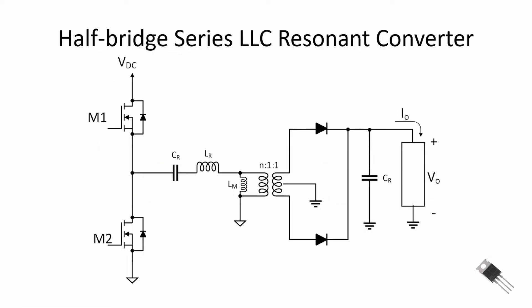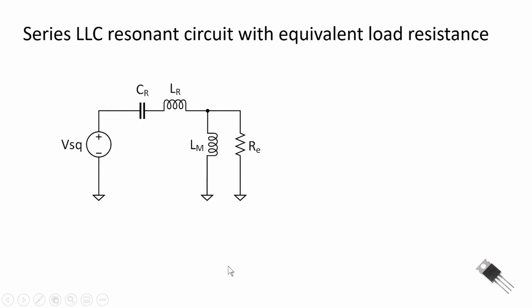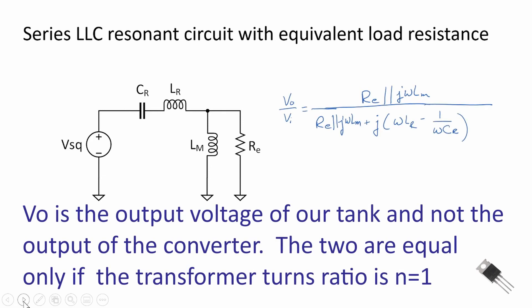Let's take a look at the series LLC resonant converter. It's similar to the series LC resonant converter, but we include the magnetizing inductance of our transformer, L sub M. L sub M will appear in parallel with our equivalent load resistance R sub E. Again, we can create an input-output equation from our input for our tank circuit to the primary voltage, which I call V sub 0 in this equation of our transformer. It is RE in parallel with j omega L sub M — the impedance of our magnetizing inductance — all over the total impedance of the circuit.